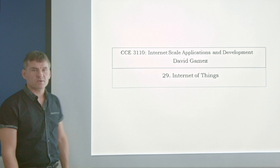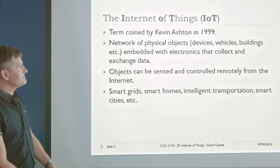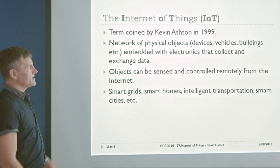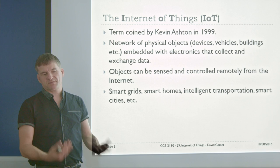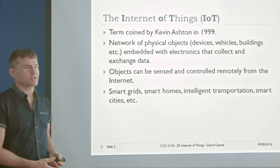This is the last lecture in this course and we're going to talk about the Internet of Things. It's a term coined by Kevin Astin in 1999. The idea is that you have a network of physical objects, devices, buildings, vehicles, and so on. These devices all have electronics embedded in them, as well as some form of wireless or wired communication, so these devices can all collect and exchange data with each other.